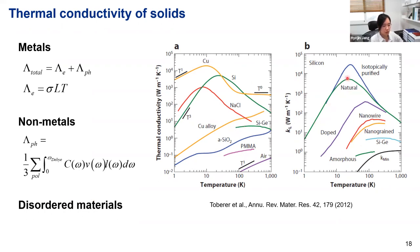The figure on the right shows thermal conductivity of silicon with behaviors changing depending on shape and composition. If you further purify or use isotopically pure silicon, you can further enhance thermal conductivity. If you make silicon into small structures like nanowires or nanograins, the conductivity decreases very significantly.